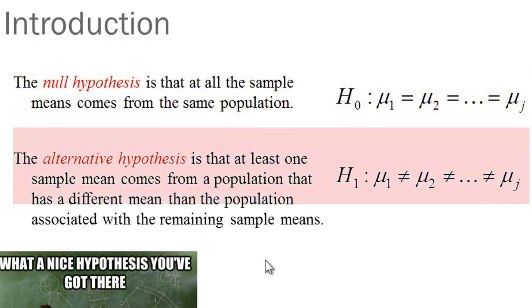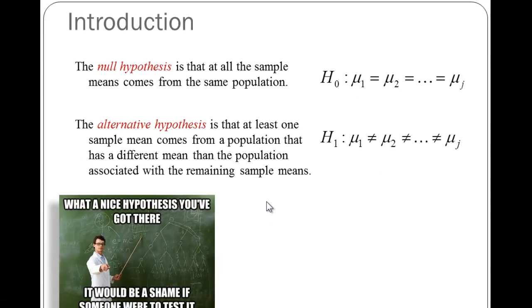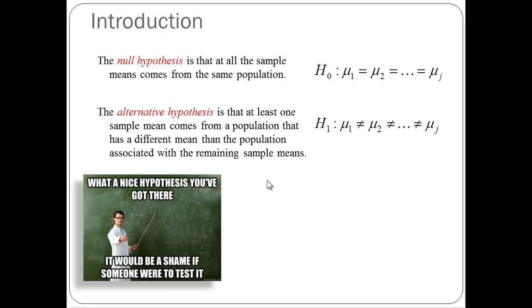The alternative hypothesis is that at least one of those sample means are not equal to each other and comes from a different population. It's another way of saying that the difference in years of education is statistically important comparing Catholic respondents to Protestant respondents. They, in essence, are drawn from different populations.